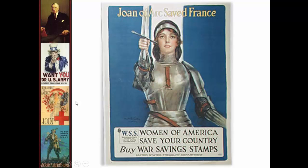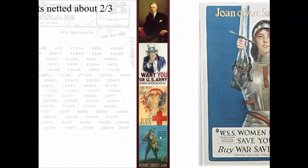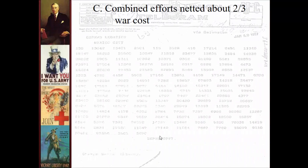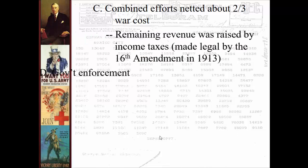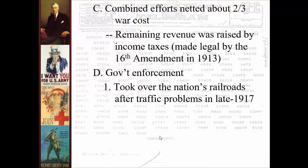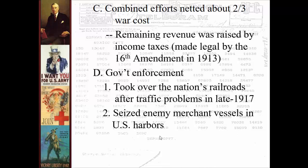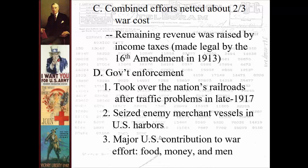Posters also showed: 'Halt the Hun' — a German soldier threatening an innocent woman and child, with the American soldier there to stop him, only thanks to you purchasing your Liberty Bond. And 'Joan of Arc Saved France — Women of America, save your country' by buying war savings stamps. Combined, all these efforts funded about two-thirds of the war. The government also took over the nation's railroads in 1917 because of traffic problems and delays — using emergency powers to operate them for efficiency. The biggest contributions the US gave to the war were food first, money second, and then men and actions on the battlefield.